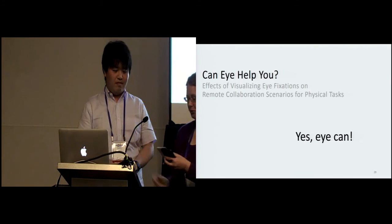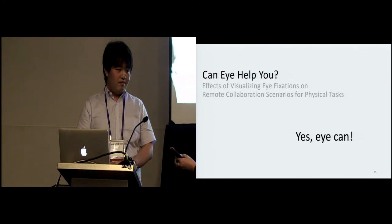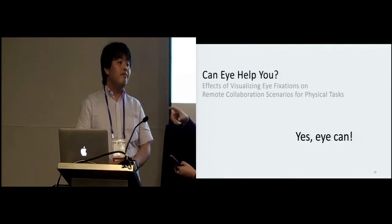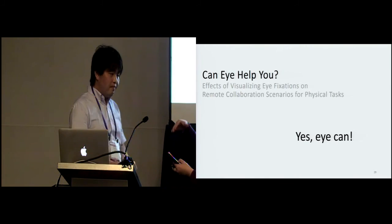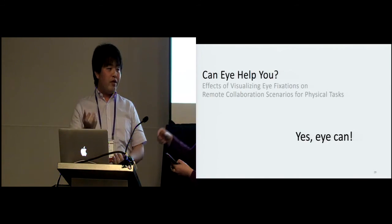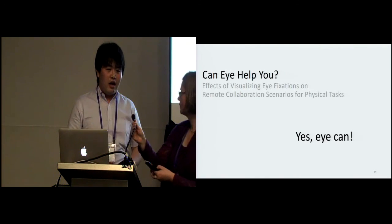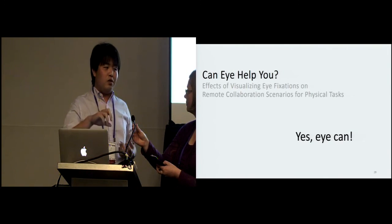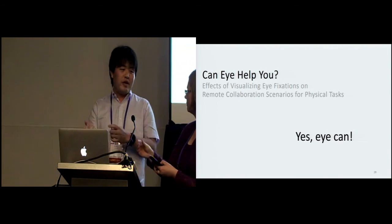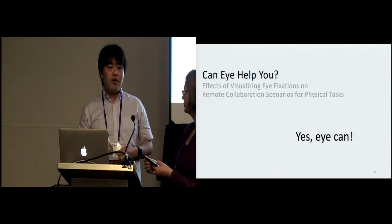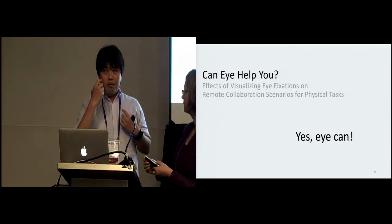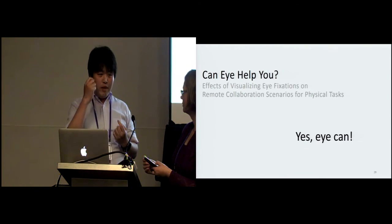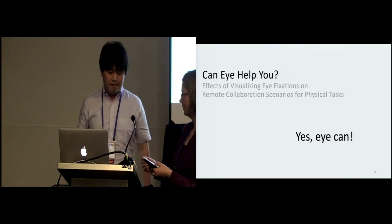A short question: you mentioned some differences in how hands were used. Yes, hands were used for describing manipulation — such as where a block is located. Eye gaze was mainly used for identifying objects.